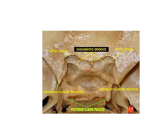This is a view of the hypophysial fossa. Here you can see the optic canal and the sulcus chiasmaticus where you get the optic chiasm. Then the end of the lesser wing gives the anterior clinoid process. Then the dorsum sellae with the posterior clinoid process and the tuberculum sellae. The tuberculum sellae, the hypophysial fossa, and the dorsum sellae together form the sella turcica, where you get the pituitary gland.